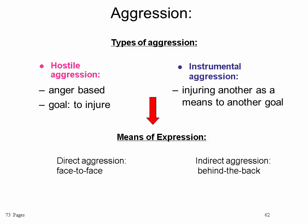There are two major types of aggression: hostile aggression and instrumental aggression. Hostile aggression is anger-based and its goal is to injure a specific person. The means of expression is direct aggression — face-to-face, in-your-face type of aggression.